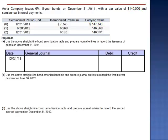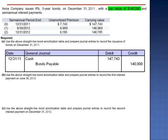The journal entry to record the issuance is a debit to cash for the amount that the company receives as a result of the issuance, $147,743. We credit two liability accounts: bonds payable holds the par value, $140,000, and premium on bonds payable holds the difference, $7,743.